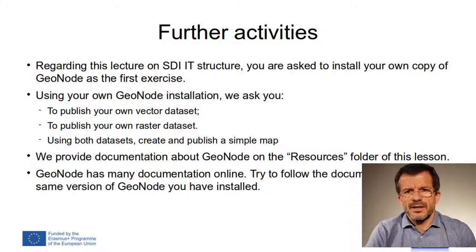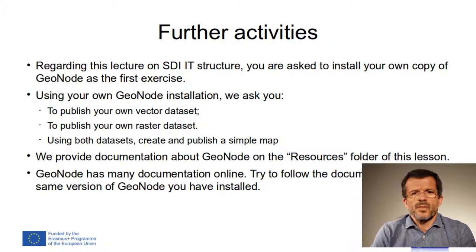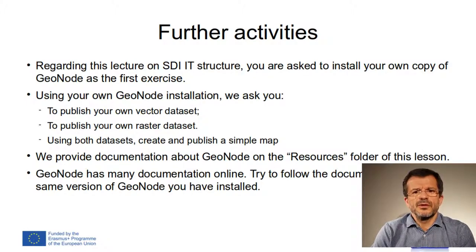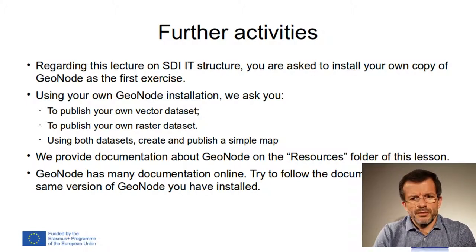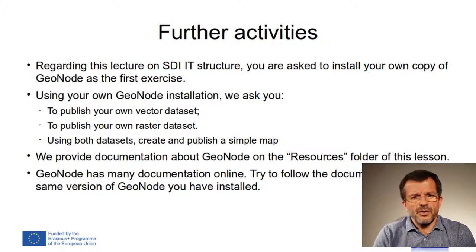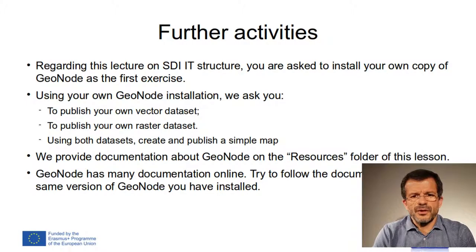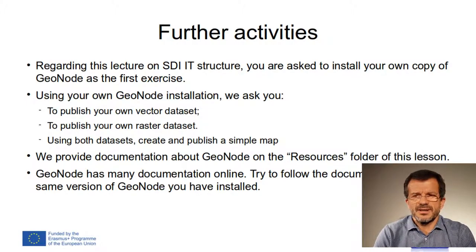Regarding this lecture on SDI IT structure, you are asked to install your own copy of GeoNode as the first exercise. Using your own GeoNode installation, we ask you to publish your own vector dataset, to publish your own raster dataset, and using both datasets create and publish a simple map. We provide documentation about GeoNode installation in the resource folder of this lesson. GeoNode has extensive documentation online — try to follow the documentation for the same version of GeoNode you have installed. Thank you so much for your interest and attention.